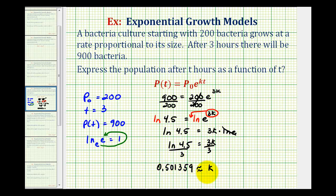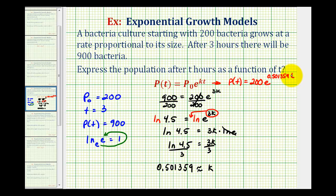Now that we have our exponential growth rate we know our exponential model. It's going to be p of t equals 200 times e raised to the power of 0.501359 times t, where t is the time in hours.